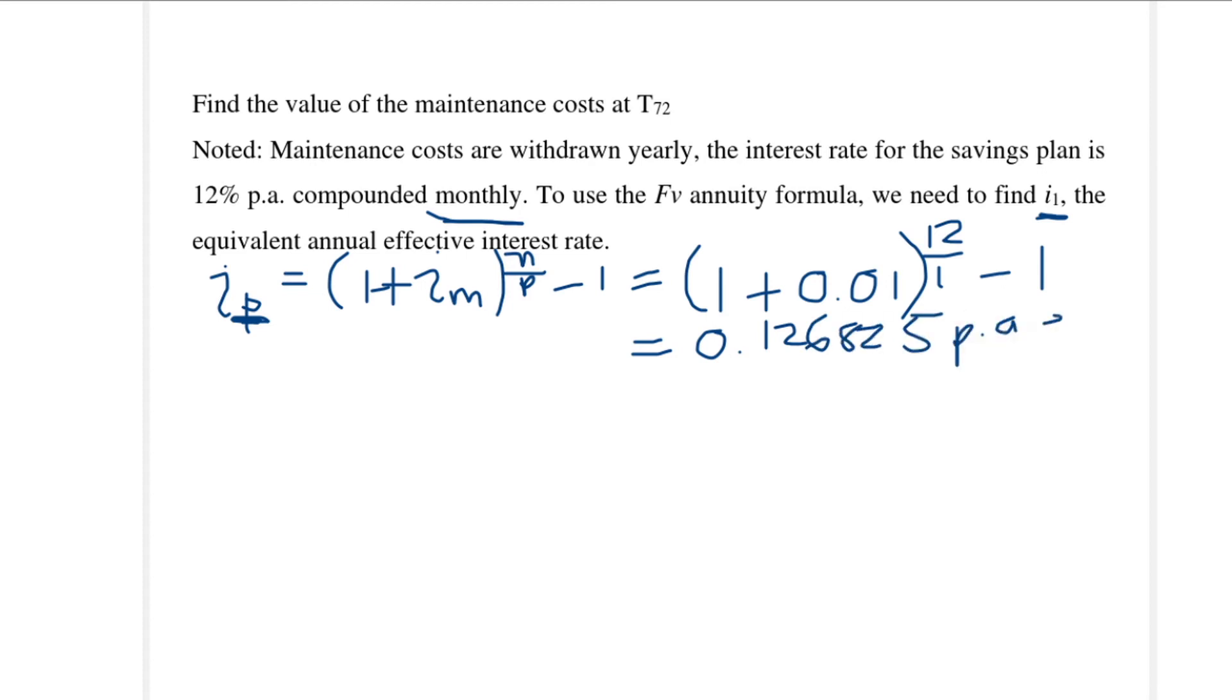That's per annum effective, or 12.6825% per annum effective. And now we can make use of the future value formula for an annuity to find the maintenance cost at time T₇₂. I might now make use of the interest rate that I've calculated here, 0.126825, and that's for six years.